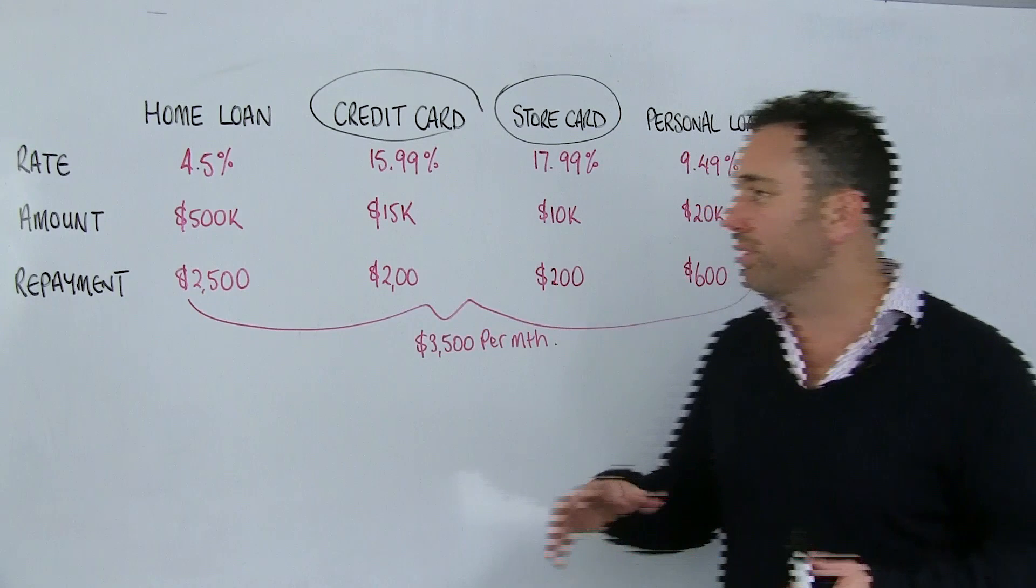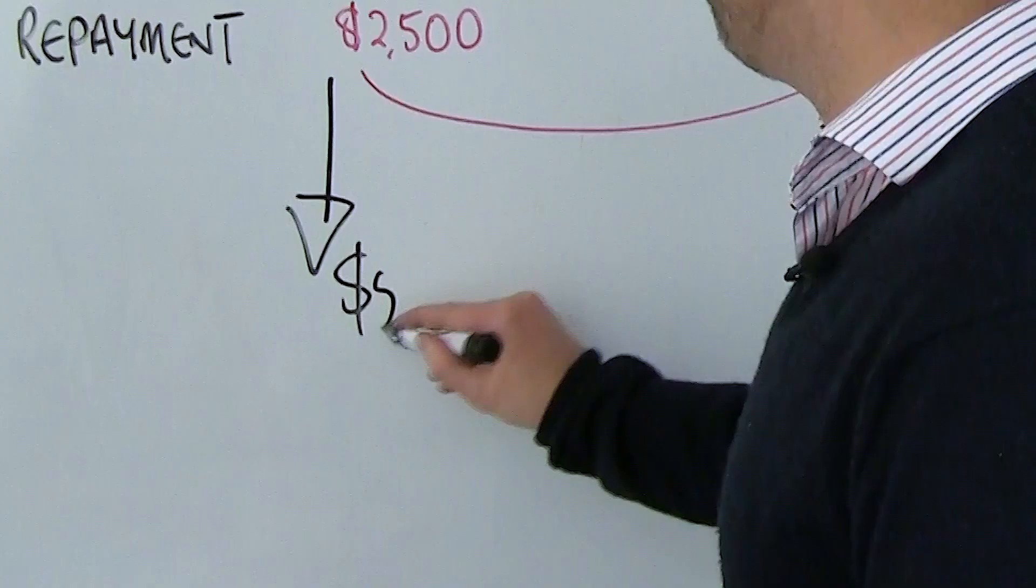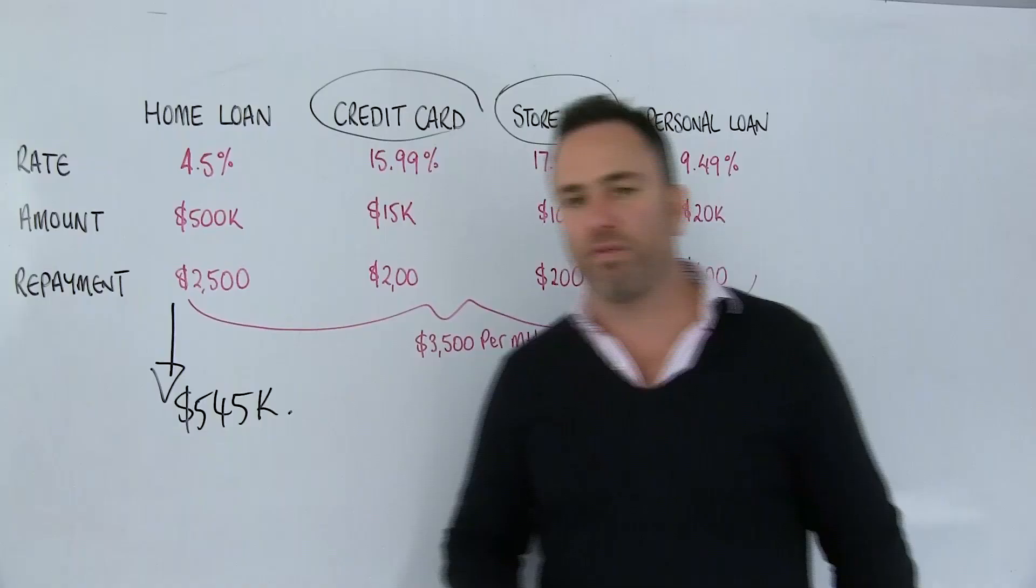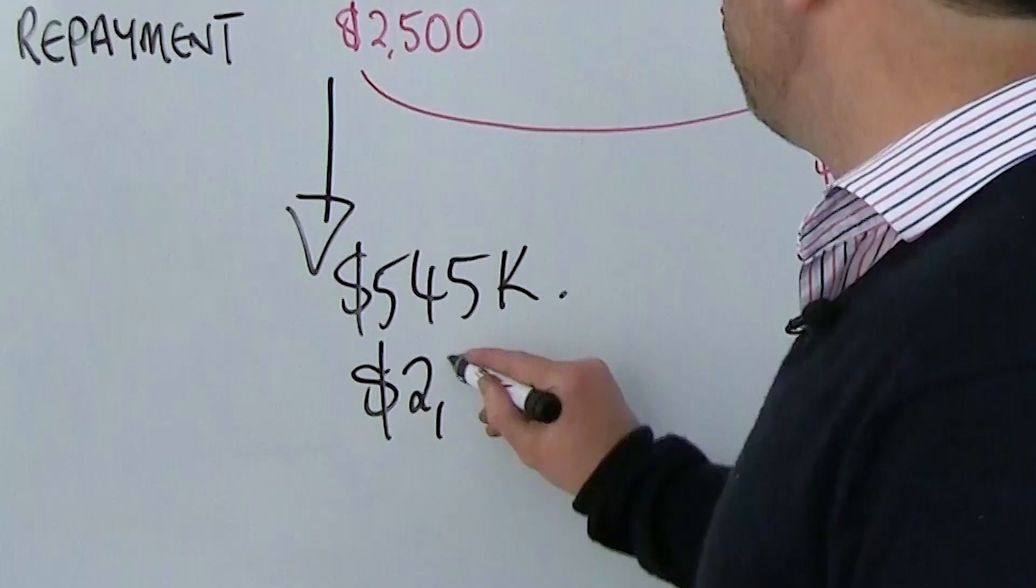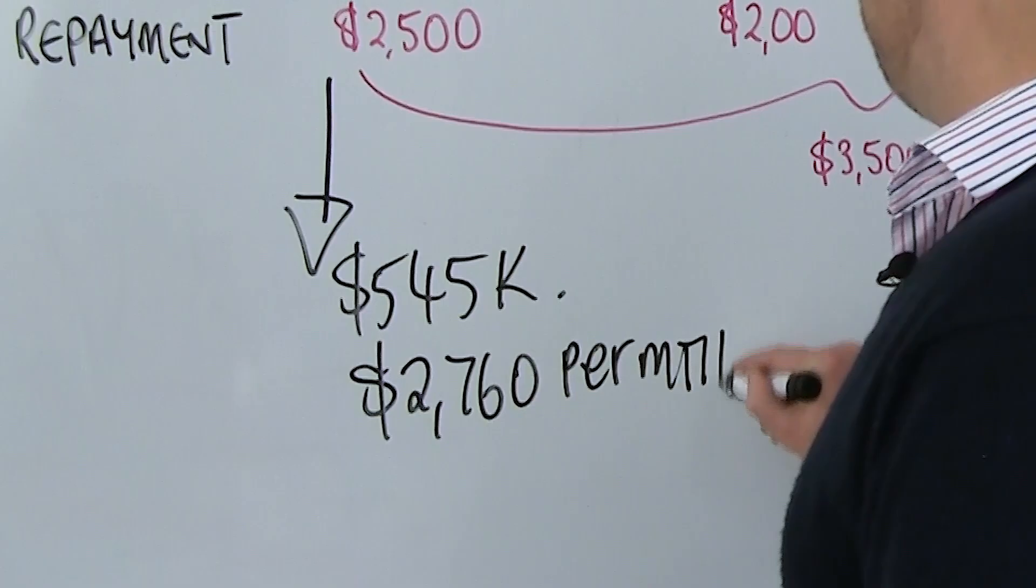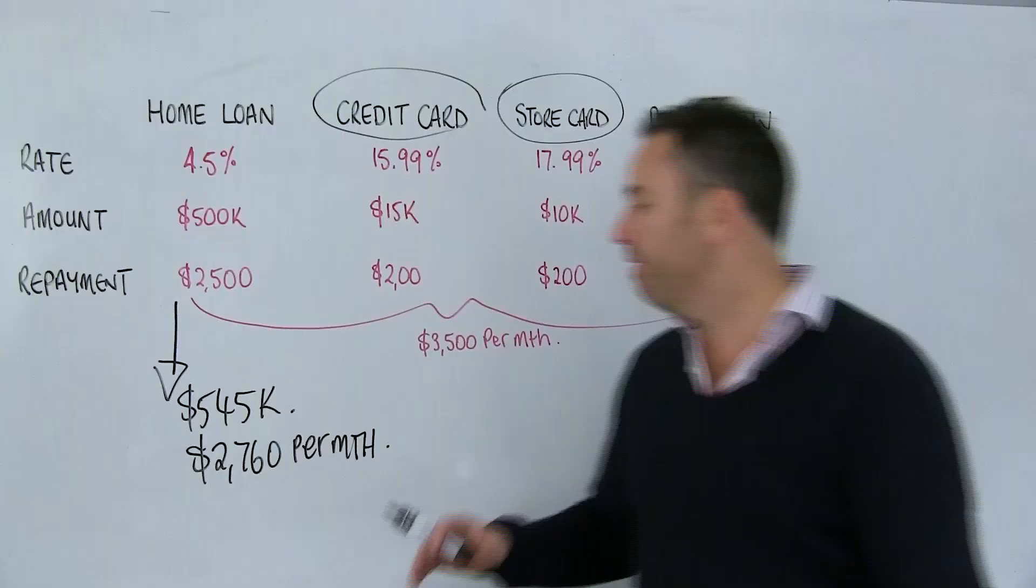What they've got to understand is that that's fine if we consolidate all of this debt. And we can wrap it all up under the home loan and give them a $545,000 home loan at 4.5%. And guess what? Because the interest rate is lower, the repayment would drop down to around about $2,760 per month. Fantastic. So what's that? That's about a $740 saving on a monthly basis. And from a cash flow perspective, fantastic.